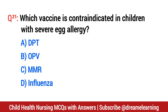Question number 21. Which vaccine is contraindicated in children with severe egg allergy? The right option is D: influenza.